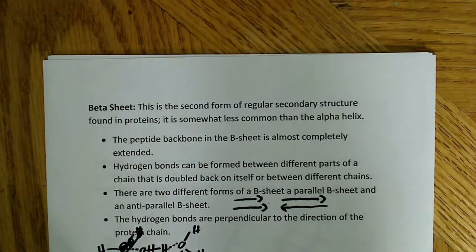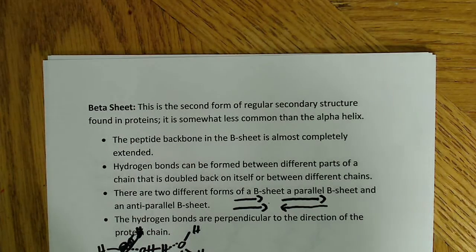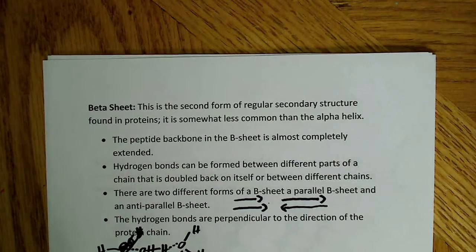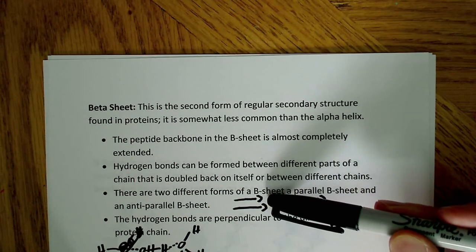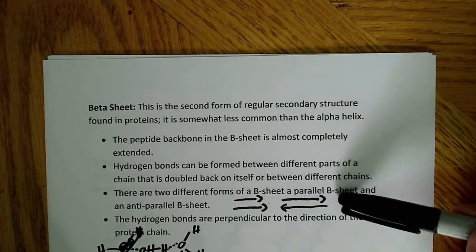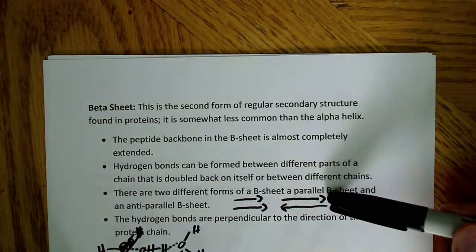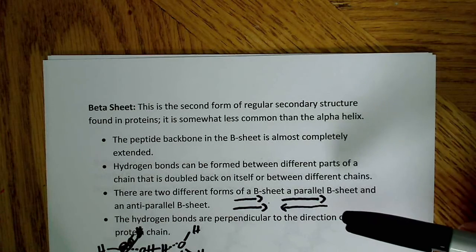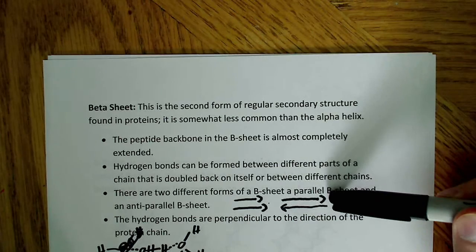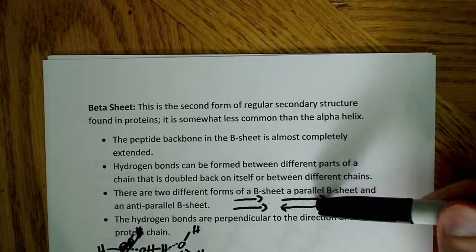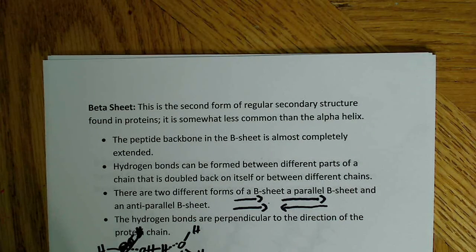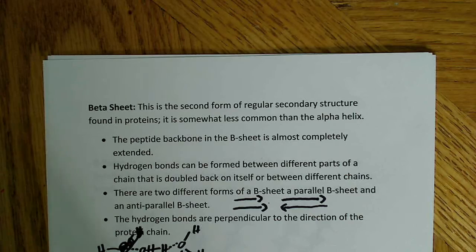There are two different forms of beta sheets: an anti-parallel beta sheet and a parallel beta sheet. I drew these arrows to show that a parallel beta sheet has both strands running in the same direction. An anti-parallel beta sheet has both strands running in opposite directions. If this were my N terminus over here and C terminus on this end, it would be N to C. And then over here, it would be N to C. So it would just be the reverse.